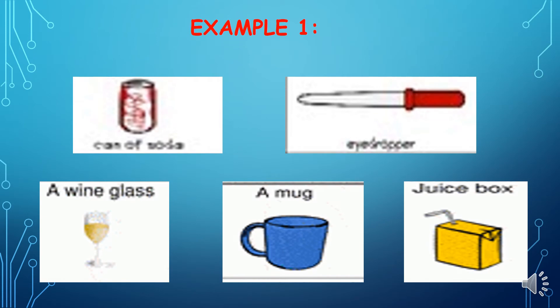Example number 1. These are objects that show we're going to use the unit of milliliters. The first one is can of soda. Second is eyedropper.